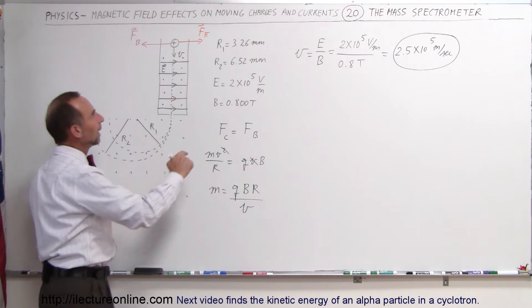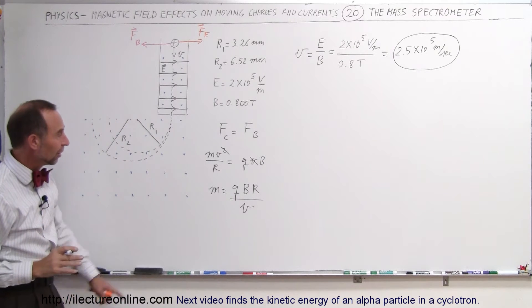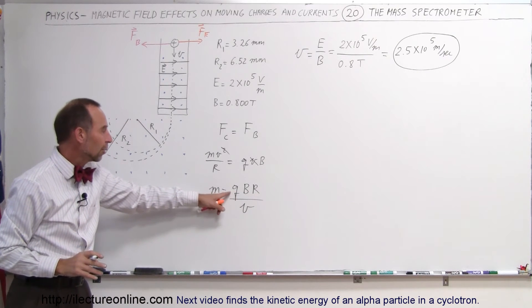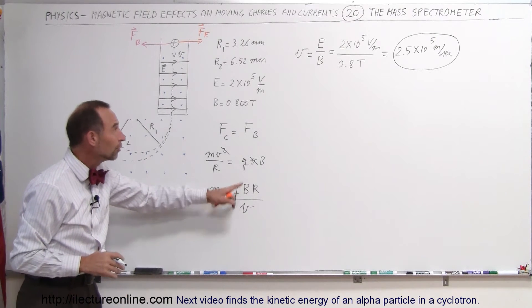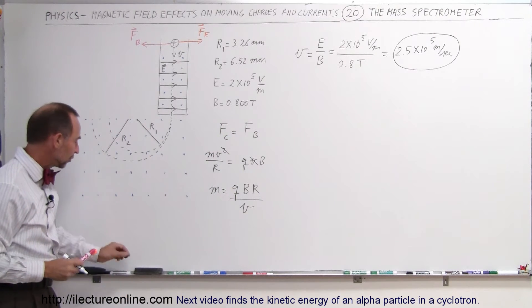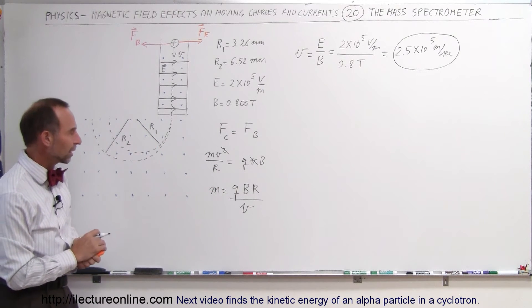Radius 1, radius 2. And let's say that they're equal to 3.26 and 6.52 millimeters. We know the strength of the magnetic field. We know the charge on each particle. We assume it's a single charge. And we know the velocity because we took the velocity selector and forced the velocity to be 2.5 times 10 to the fifth meters per second.